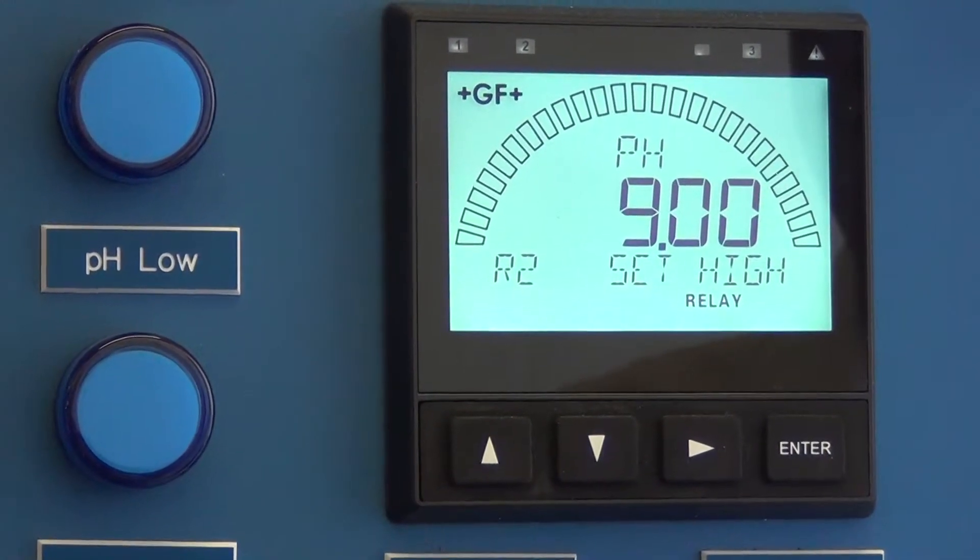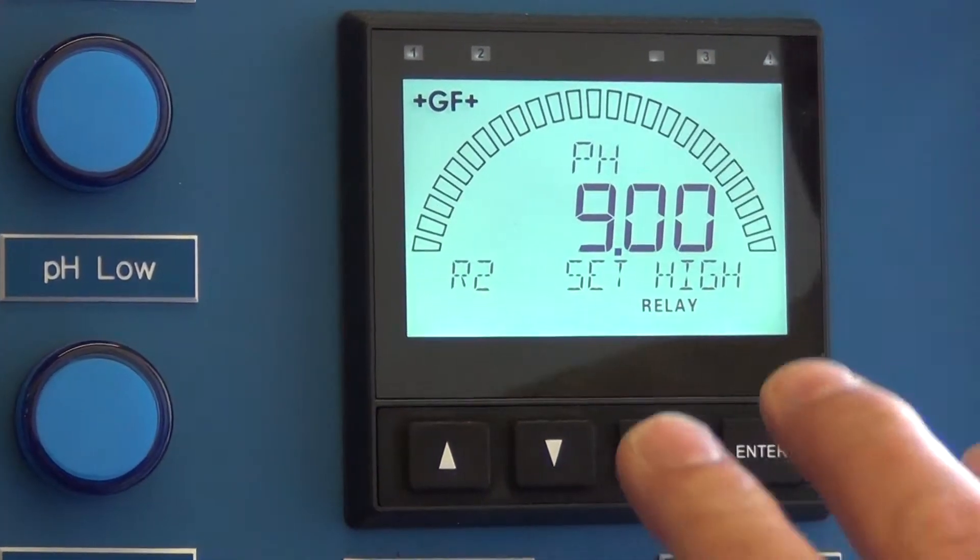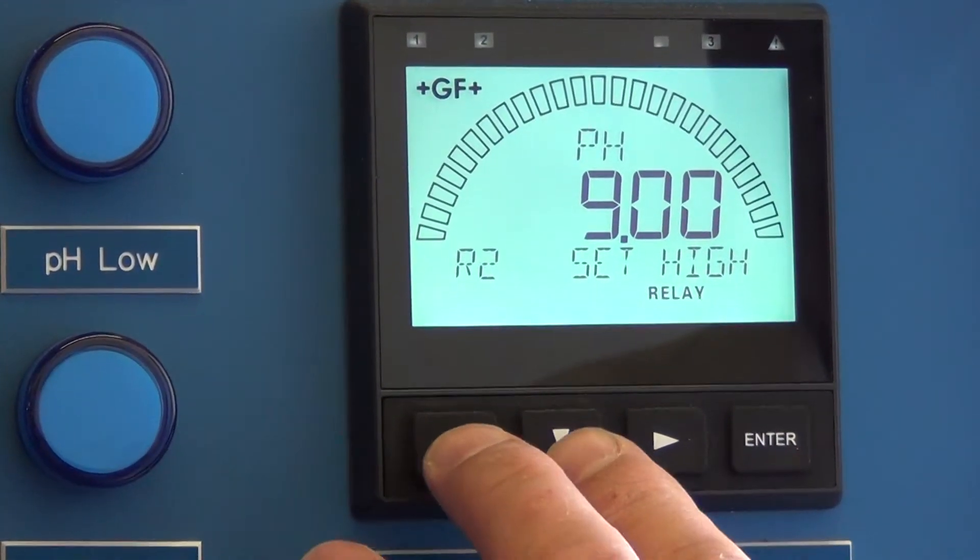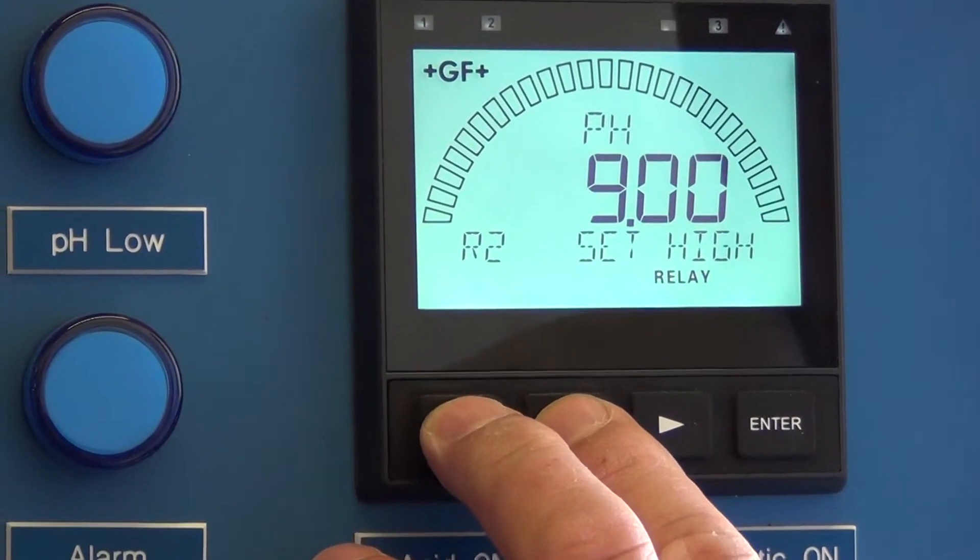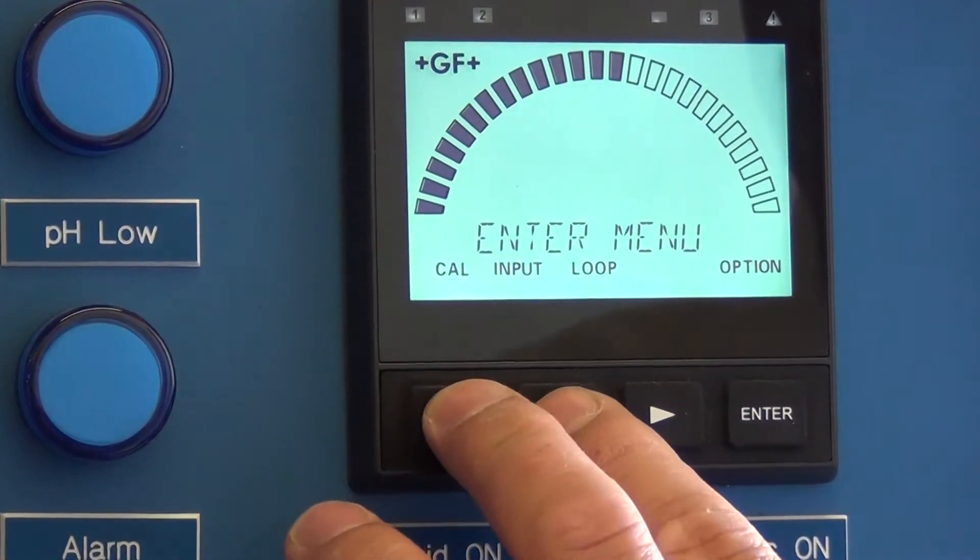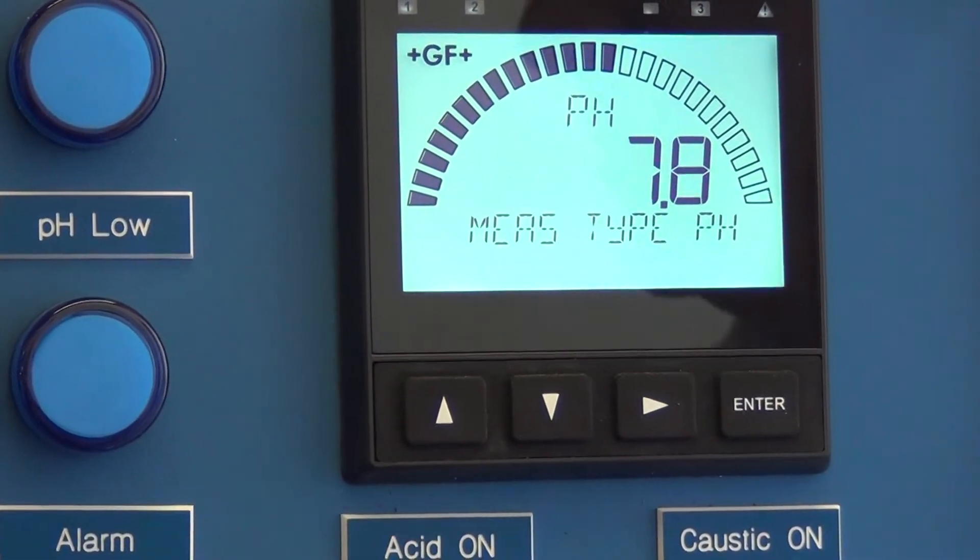If you're finished setting all of the pH values, hit up and down together twice. Once backs it up to that menu, second time backs it out.